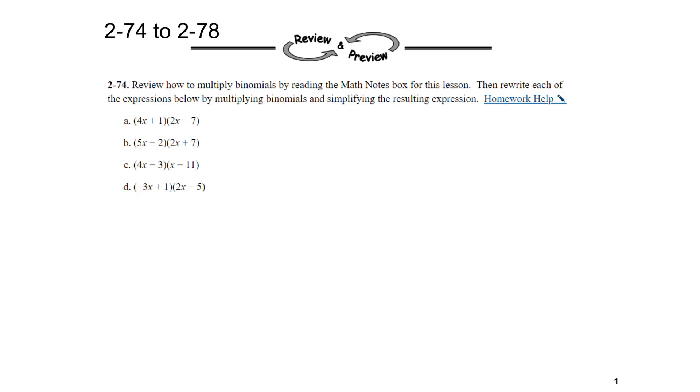Hello, welcome to chapter 2, homework questions 74 through 78. Question 74: review how to multiply binomials by reading the math note box for this lesson. Then rewrite each of the expressions below by multiplying binomials and simplifying the resulting expression.